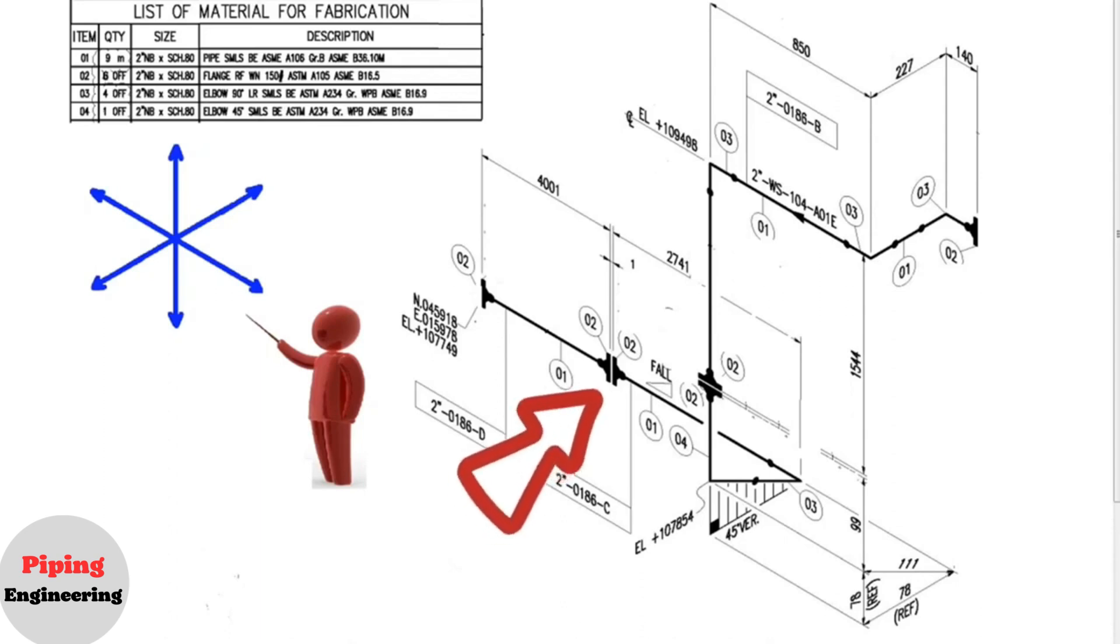This is the pipe isometric. This is the list of materials on the drawing. These are the directions.